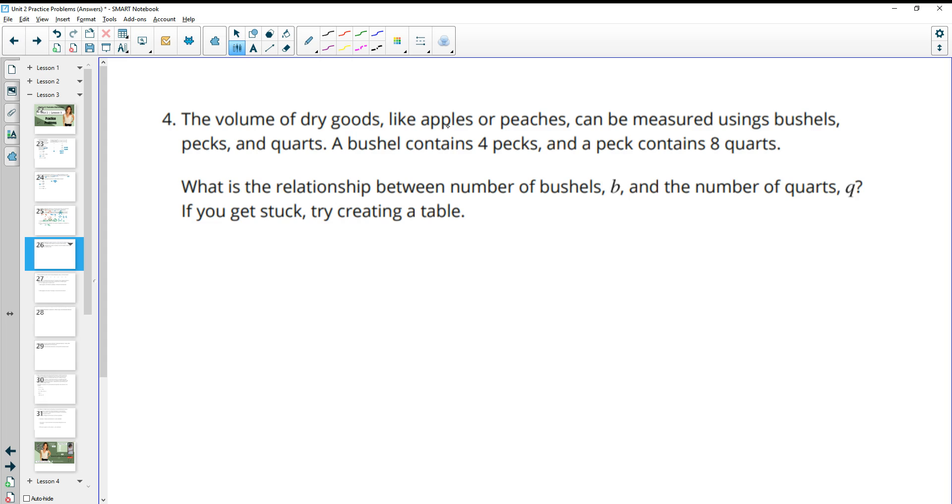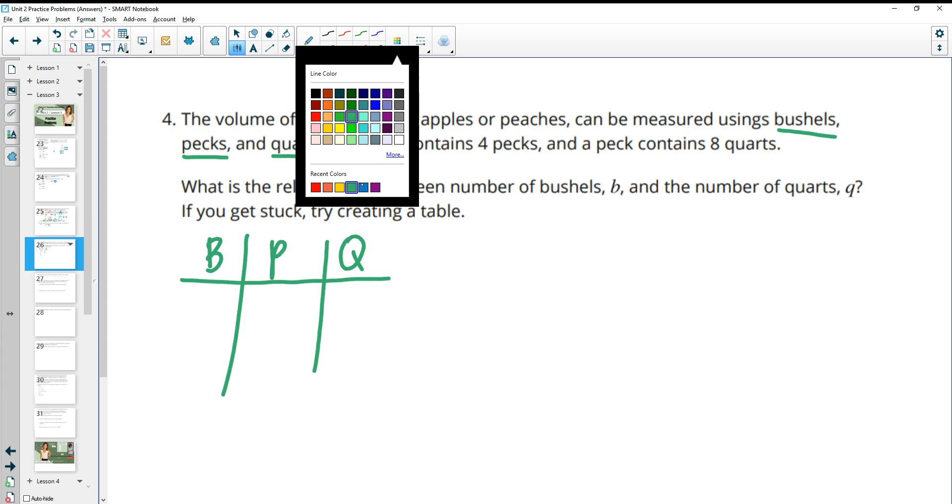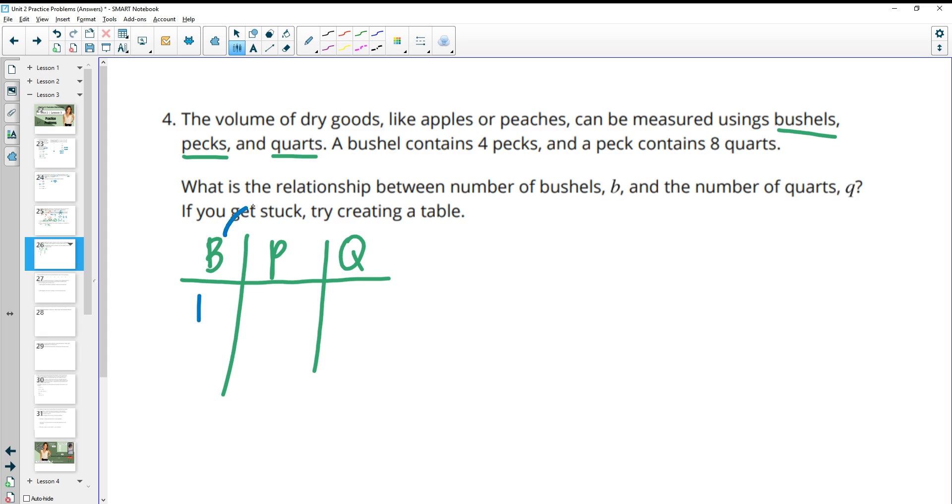Number four, the volume of dry goods like apples or peaches can be measured using bushels, pecs, and quarts. A bushel contains four pecs. So if we think bushel, pec, quarts, I just like to do it like we did in the table in the last one. So if we have one bushel, then we multiply by four to get the pecs, so then we would have four. And then one pec contains eight quarts. So to go from pecs to quarts, we would multiply by eight. So in this case, we've got four times eight would be 32. So this is kind of the conversion of all of them.